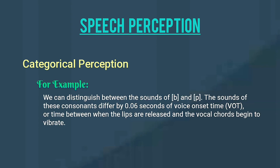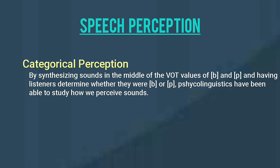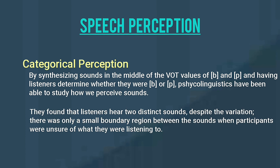For example, we can distinguish between the sounds of B and P. The sounds of these consonants differ by 0.06 seconds of voice onset time, VOT, or the time between when the lips are released and the vocal cords begin to vibrate. By synthesizing sounds in the middle of the VOT values of B and P and having listeners determine whether they were B or P, psycholinguistics have been able to study how we perceive sounds. They found that listeners hear two distinct sounds despite the variation, with only a small boundary region where participants were unsure of what they were listening to.